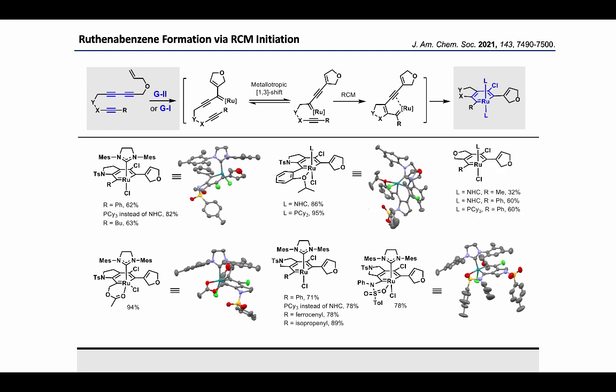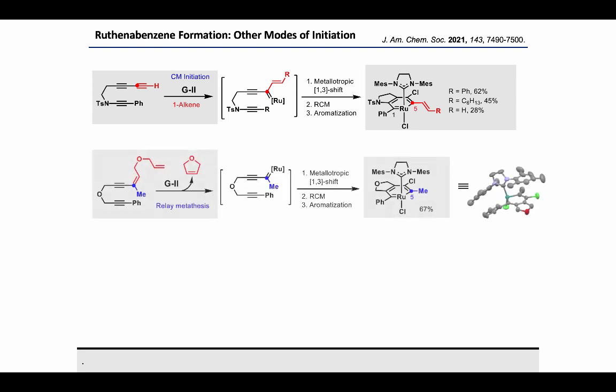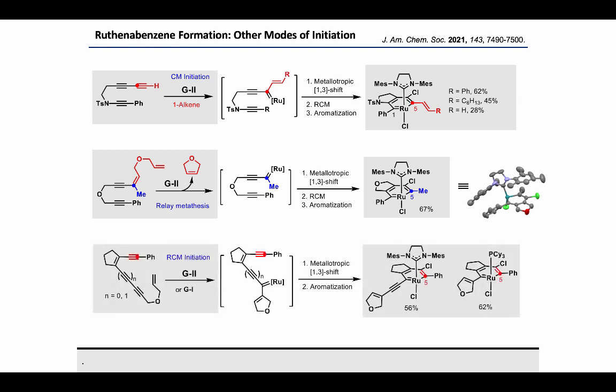The rutheniaisobenzofuran, on the other hand, has lower stability, indicated by the low isolated yield. In order to bring flexibility at the C5 carbon, we resorted to other modes of initiation. This involves cross-metathesis-based initiation, which can introduce an alkenyl substituent at the C5 position in the presence of an external alkene; a relay-metathesis-based initiation, which can introduce an alkyl substituent like a methyl group at the C5 position; or an RCM-based initiation on indiynes, which is the fundamental structure for ruthenobenzene synthesis. This led to the synthesis of ruthenobenzene in the presence of Grubbs 2 and Grubbs 1 respectively.